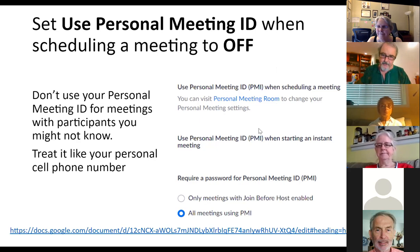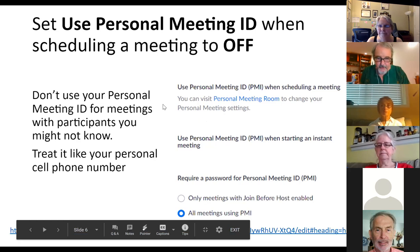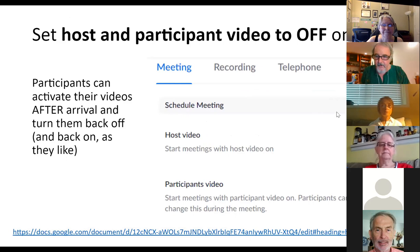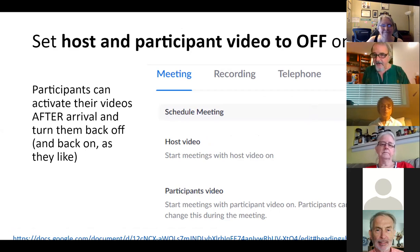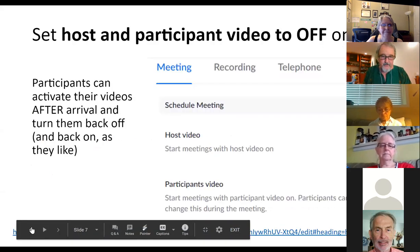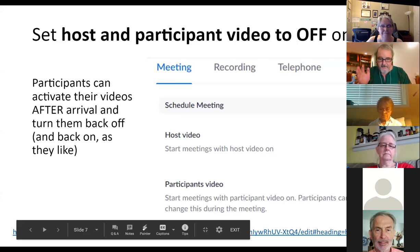You get a Personal Meeting ID when you sign up for a Zoom account — don't give it out to just anybody, treat it like a personal phone number. When scheduling a meeting, create a fresh meeting. Always set a password for it. When you schedule a meeting, participant videos are always set off, host video always set off, and mics are always set off in my basic settings — you don't want people to come into a meeting with their video on or with background noise.